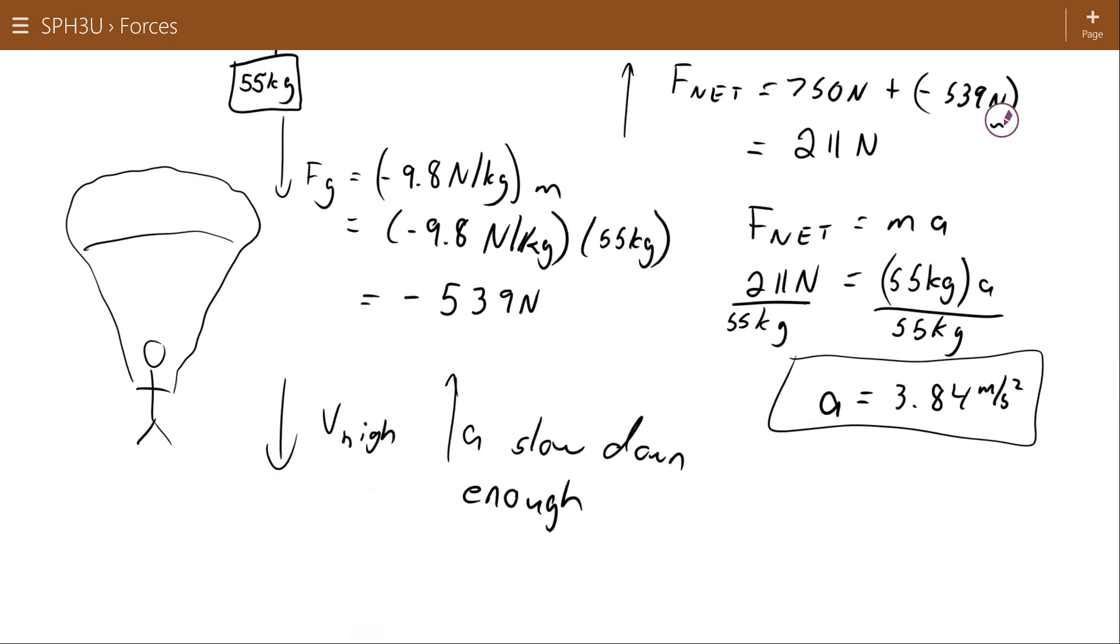So you might be thinking, shouldn't the acceleration be down because this object is in free fall and it's moving down. But remember, it's moving down but it's accelerating up. So when your movement and your acceleration are in opposite directions, that's when you have an object that's slowing down. So your velocity is becoming more upward even if you don't end up going up at any point.